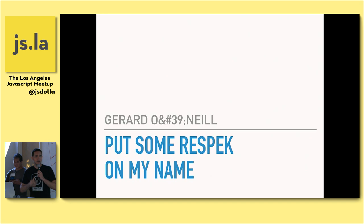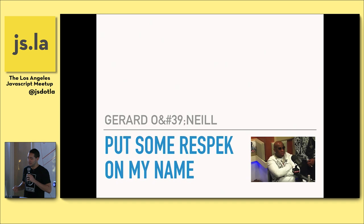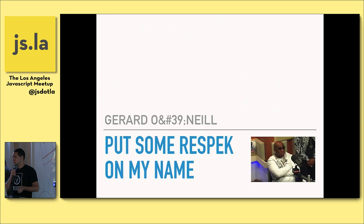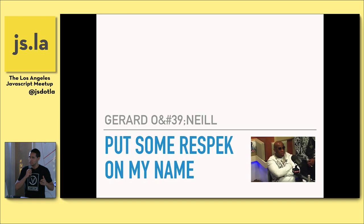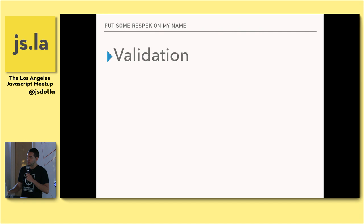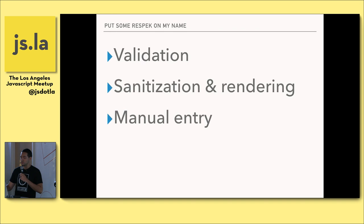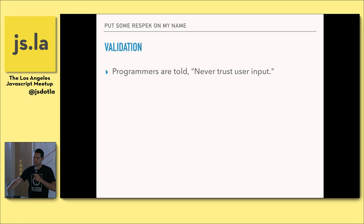Hey everyone. My name is Gerard O'Neal, and I'm here to ask all of you to put some respect on my name. The reason I'm up here is I've got an apostrophe in my last name, and it causes a wide range of issues, both in the digital world and in the physical world. The root cause of all these issues is programmers such as yourselves. I'm going to be talking about validation of names, the sanitization and rendering of names, manual entry of names, and solutions to problems caused by all of the above.